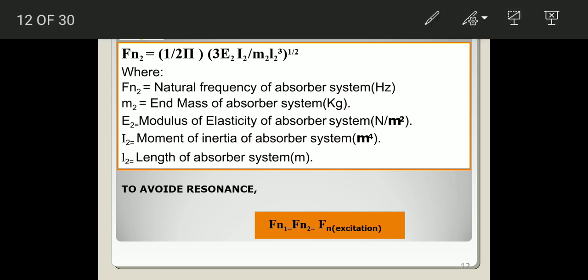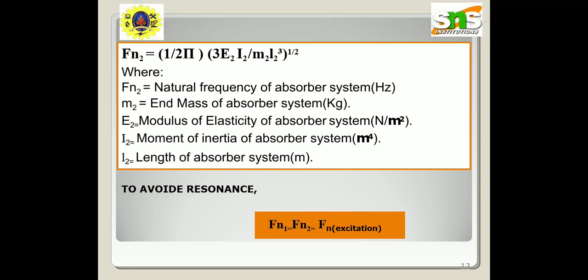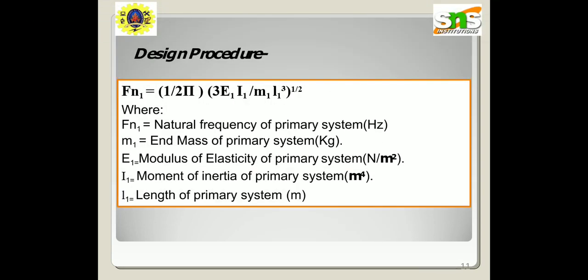The design procedure uses the equation: fn = (1/2π)·√(3E₁I₁ / m₁L₁³), where fn is the natural frequency of the primary system, m1 is the end mass of the primary system, E1 is the modulus of elasticity, I is the moment of inertia, and L is the length of the primary section.